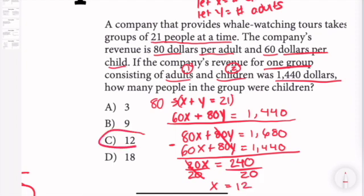So my answer is C. The reason I multiplied by 80 is because I'm trying to find the number of children, which is x. To find x, the fastest way was to cancel out y by multiplying by 80.